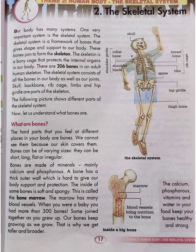Inside a big bone there is a liquid known as marrow. It contains blood vessels that give nutrition to the bone. The calcium, phosphorus, vitamins and water in your food keep your bones healthy and strong. So we should consume more calcium, phosphorus, vitamins and water for healthy bones.